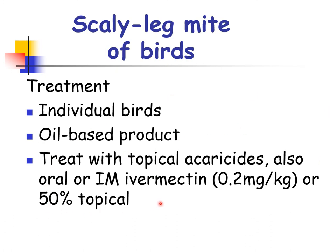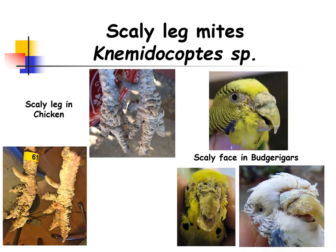Insecticide treatment is an option but must be administered on the advice of a veterinarian. Treatment can also include topical acaricides or oral/IM ivermectin at 0.2 mg/kg or 50% topical. The scaly leg mite can cause scaly leg in chickens and scaly face in budgerigars.